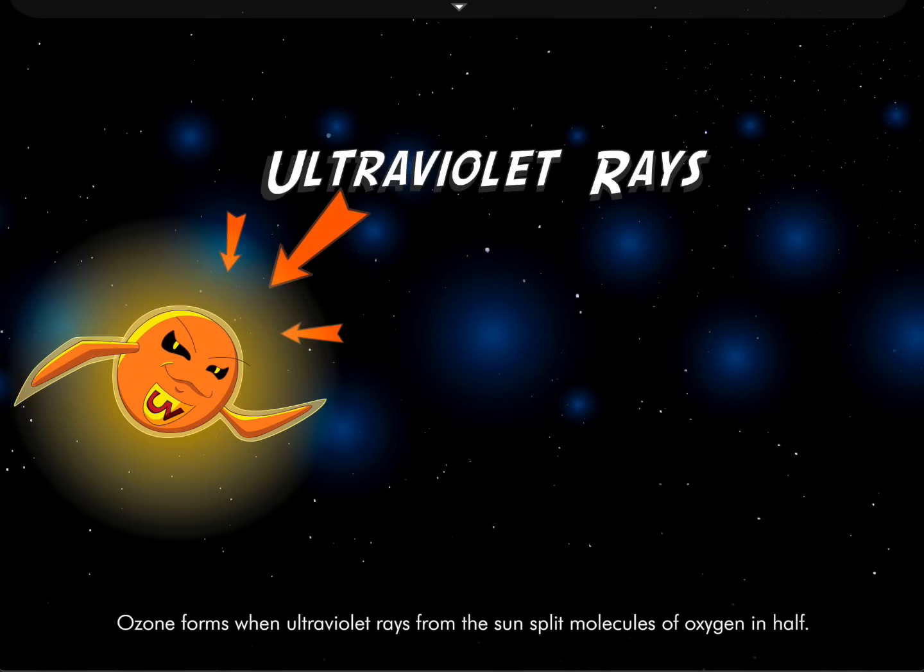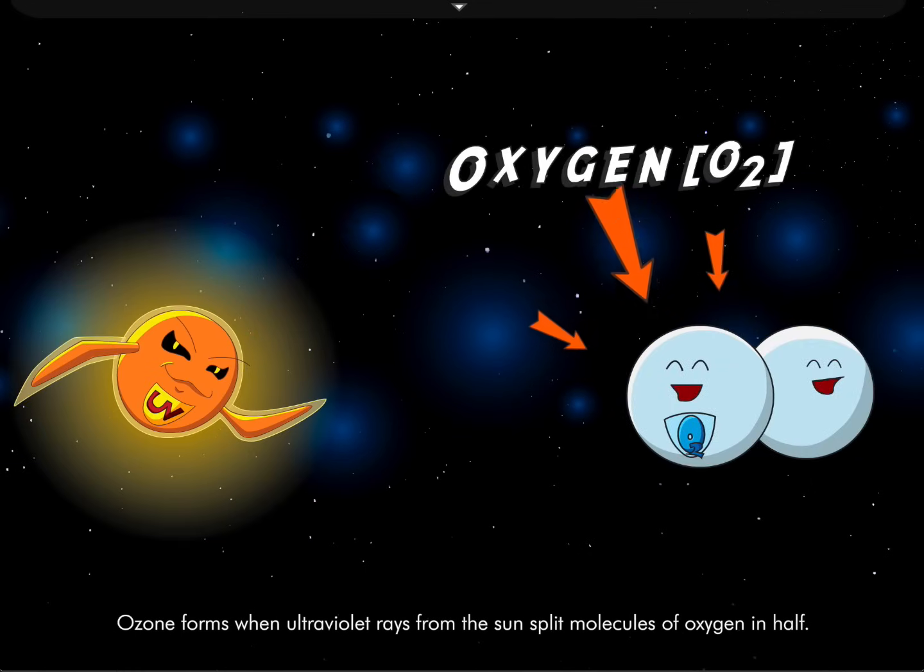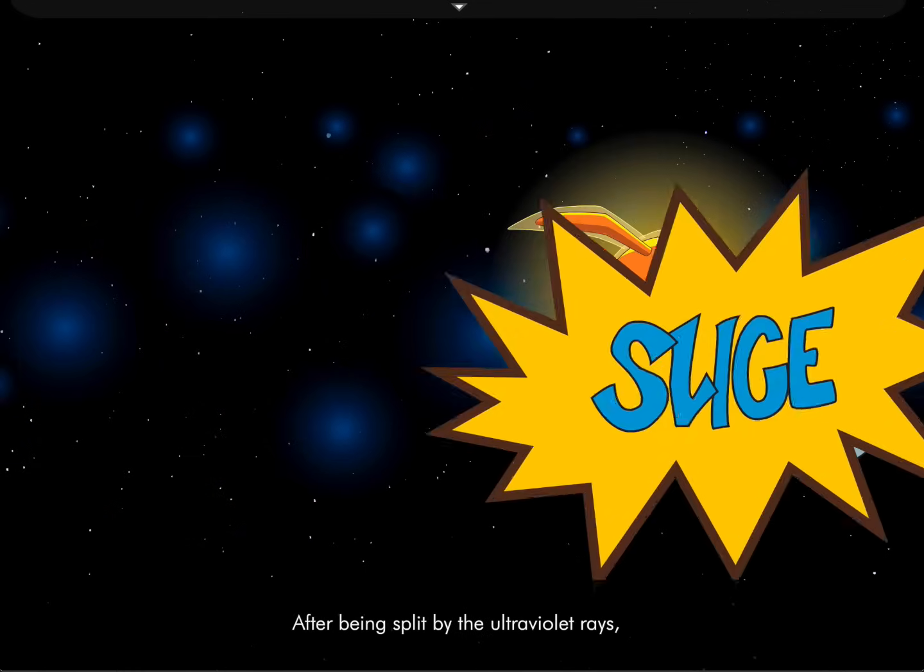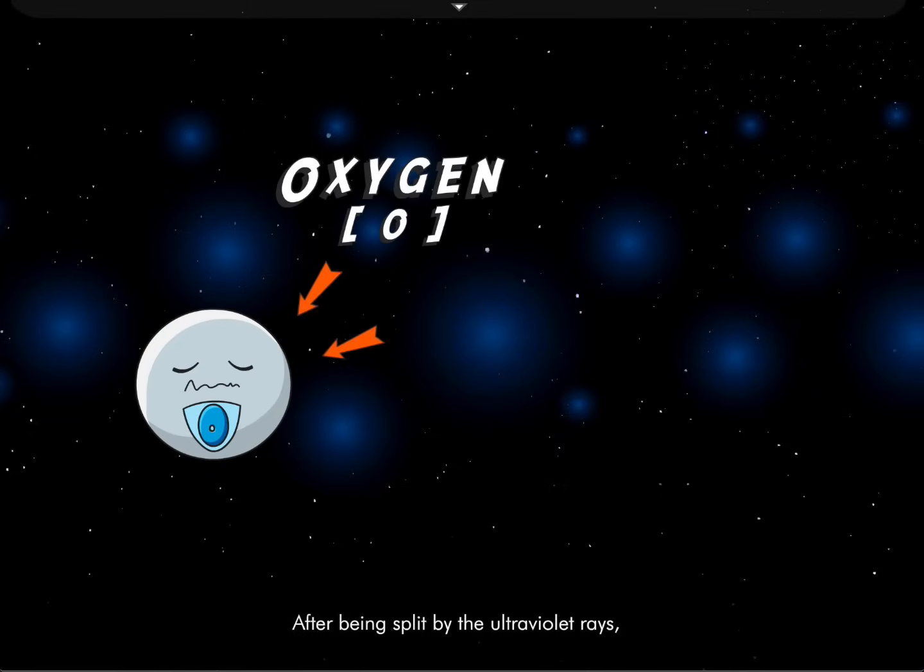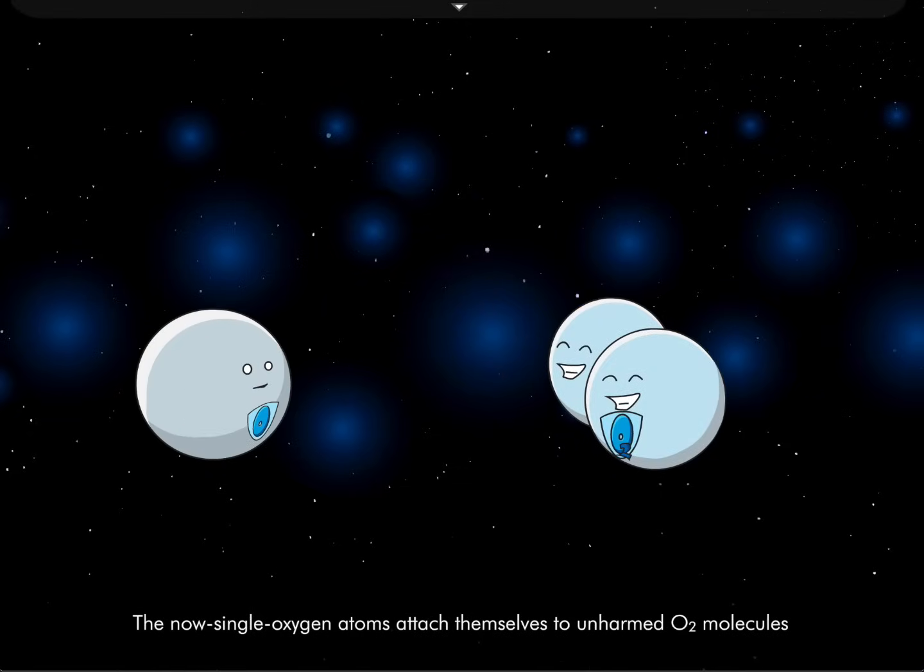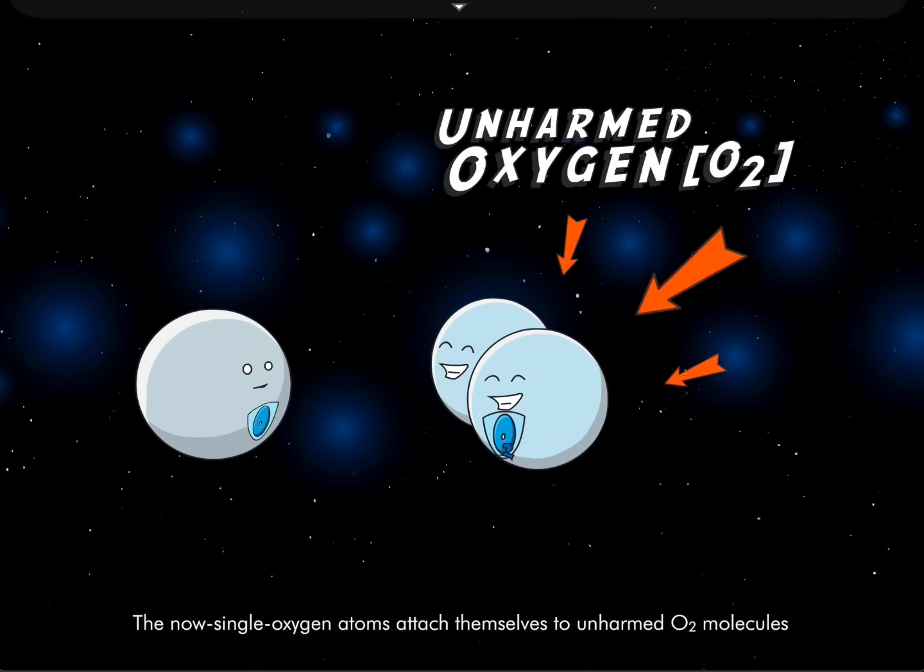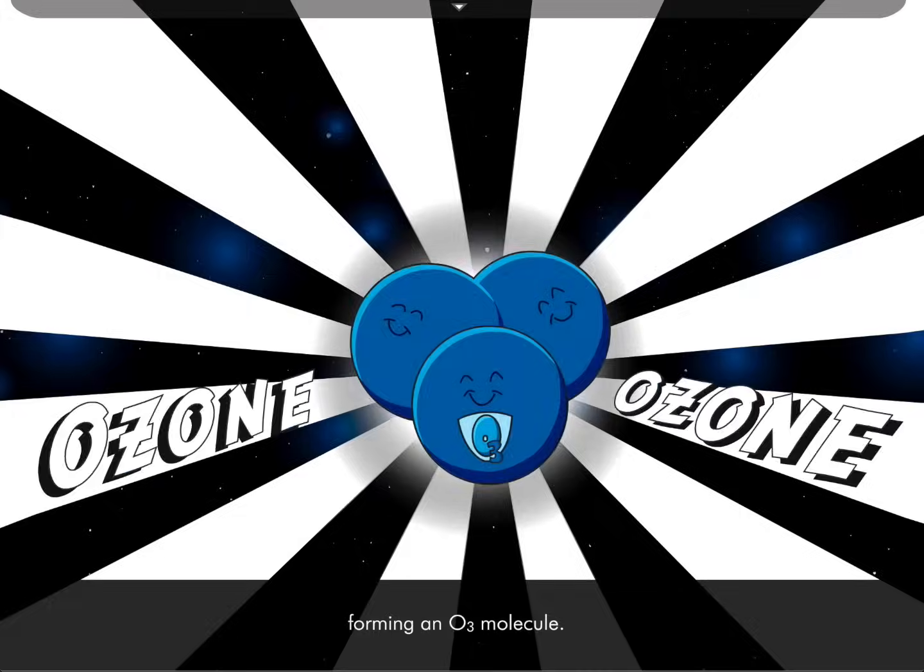Ozone forms when ultraviolet rays from the sun split molecules of oxygen in half. After being split by the ultraviolet rays, the now single oxygen atoms attach themselves to unharmed O2 molecules forming an O3 molecule or ozone.